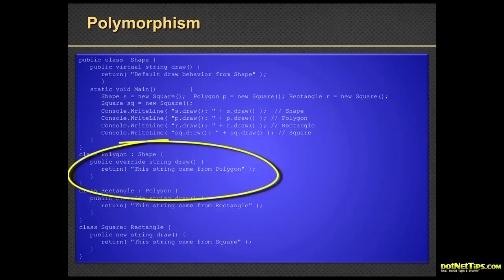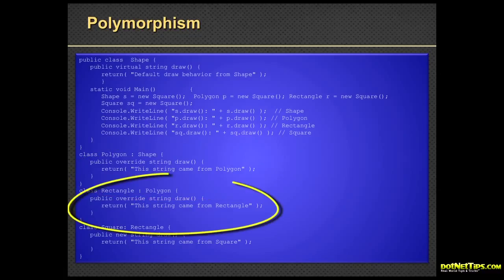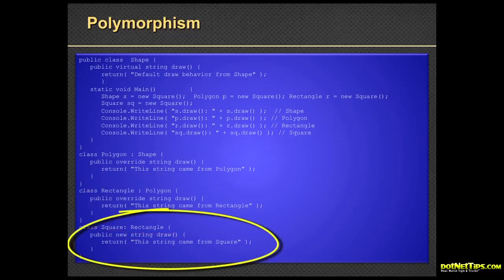If you do shape, it does this. If you do draw on polygon, it does this. In rectangle, we're actually inheriting polygon and again overriding draw and returning this string came from rectangle. Then down here, I'm doing square, basically wiping out draw completely and doing my own draw. It's not even overriding the other one. When you do the new keyword, you're essentially just wiping out any of the base class implementation.